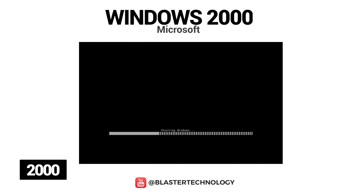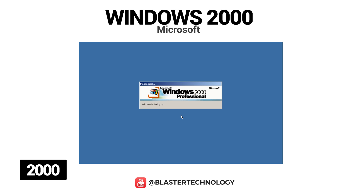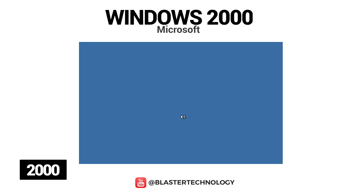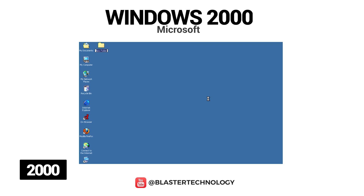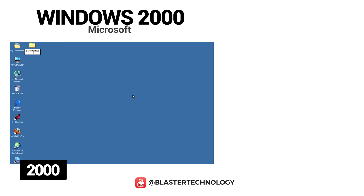Windows 2000 came with a number of new features such as an improved device manager, Windows Media Player, and a revised DirectX. It also had a multilingual user interface, with users being able to choose their display language.